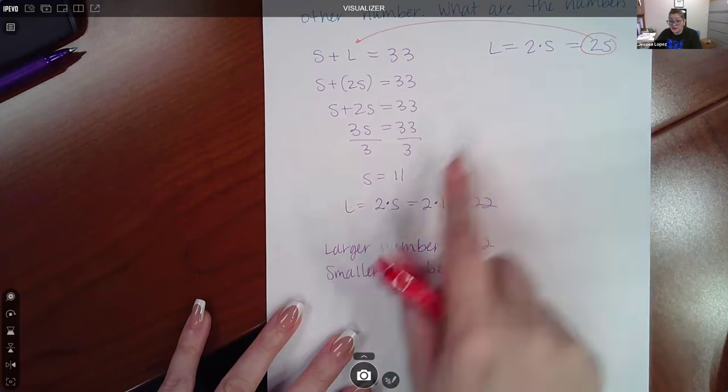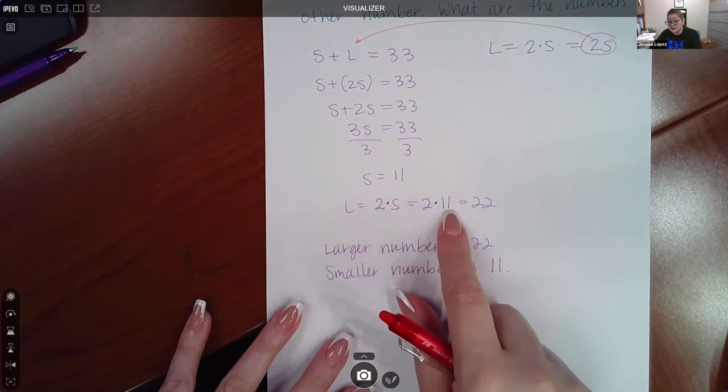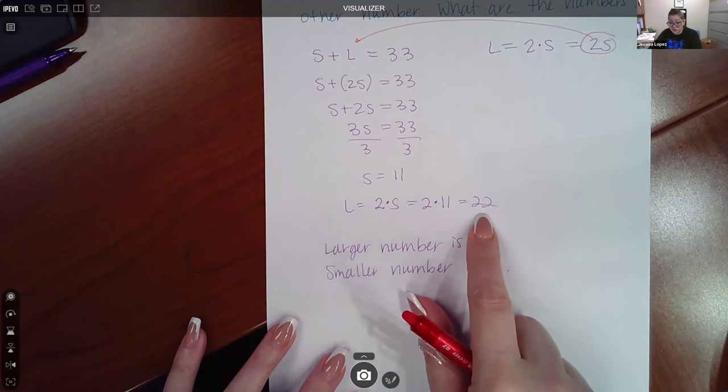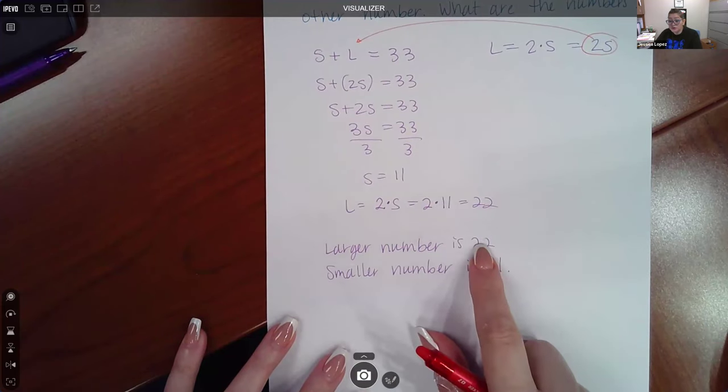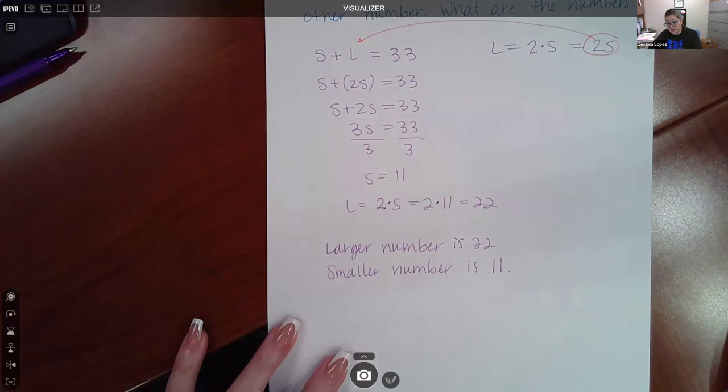You have this formula here to calculate the larger number. It's just two times S, which means two times 11, which is 22. So the larger number is 22. The smaller number is 11. And if you add those up together, you do end up with the 33 total.